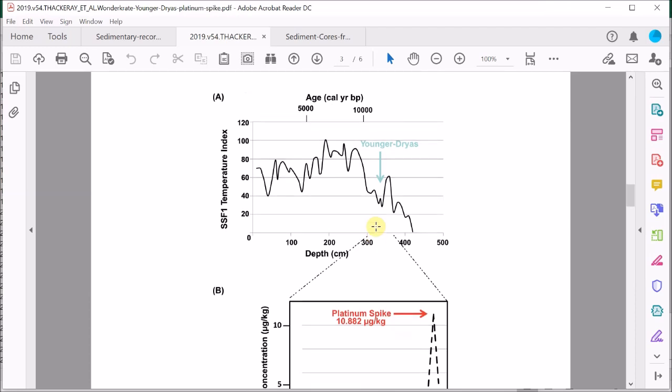So it does seem likely that this is the Younger Dryas platinum spike. Now one more thing: volcanism is unknown at this time in this region of South Africa, indicating this platinum is probably resulting from a cosmic impact.